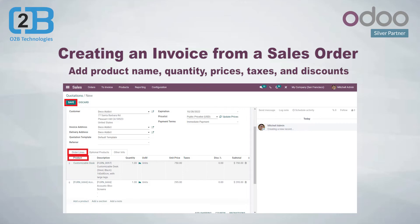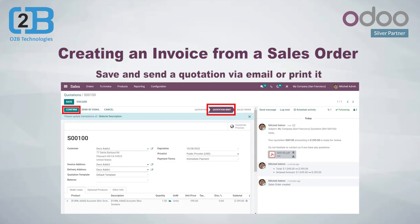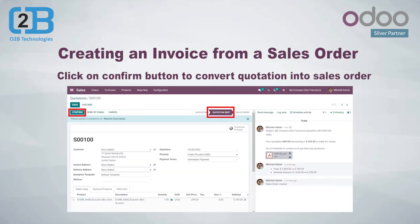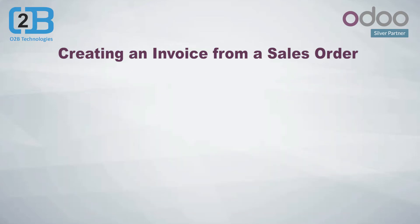Add product name, quantity, prices, taxes, and discounts if required. Then save and send it to the customer via email or print it. Once you click on the send by email button, you will see a window with your email preview. You can pre-define the email template for your quotations and sales orders and send email in a few seconds. As soon as you send the quotation, it will move to the quotation sent stage. Now, once you get the confirmation from your customers, you can click on the confirm button to convert it to the sales order.